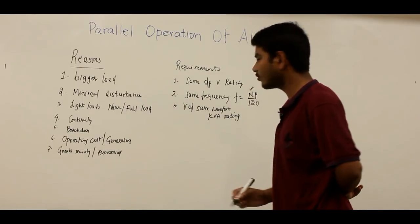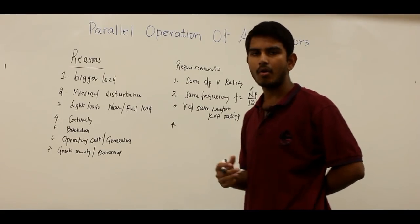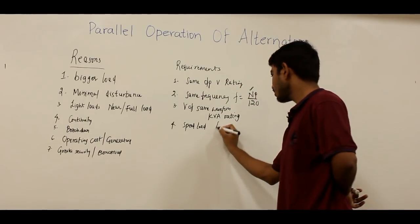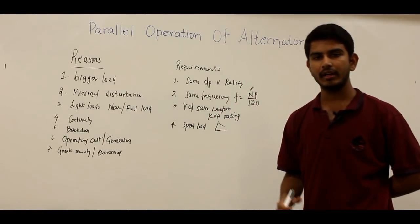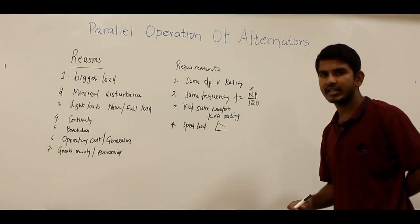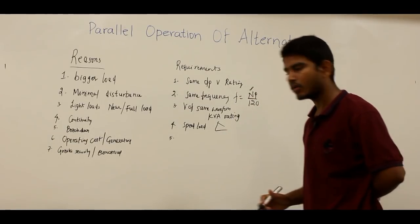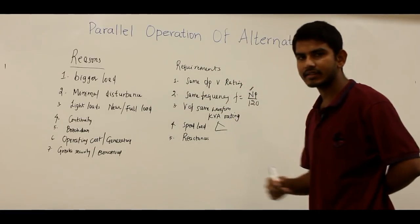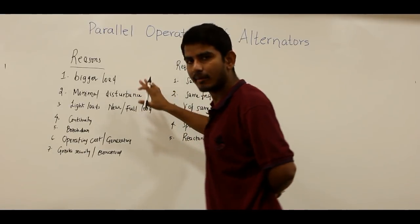The fourth requirement is that the prime movers of the two alternators should have the same speed-load characteristics, which is a drooping characteristic. This is required so as to load the generators in proportion to their output ratings. The fifth requirement is that the alternators going to be operated in parallel should have reactances in their armature; otherwise there won't be successful parallel operation.